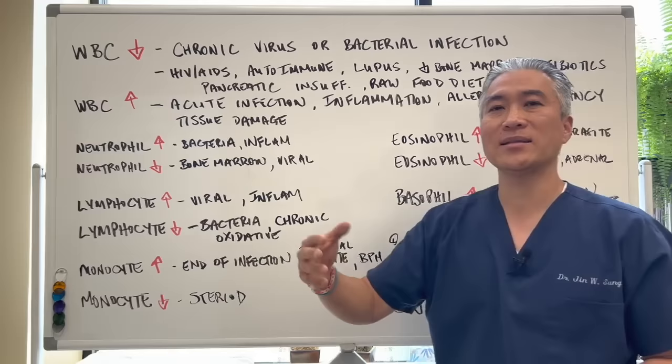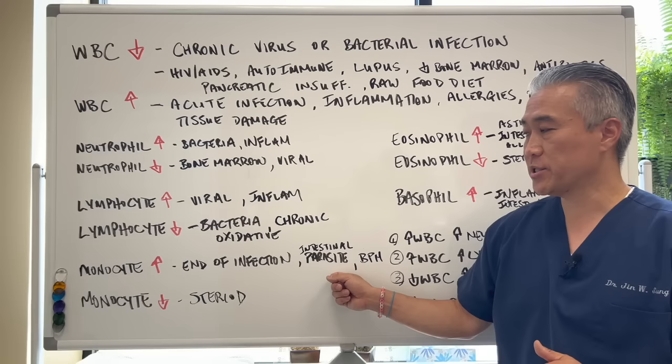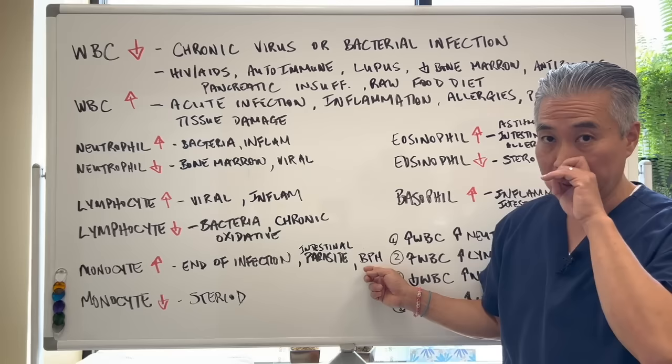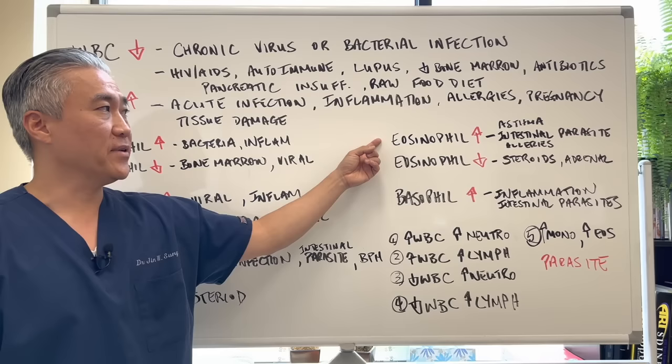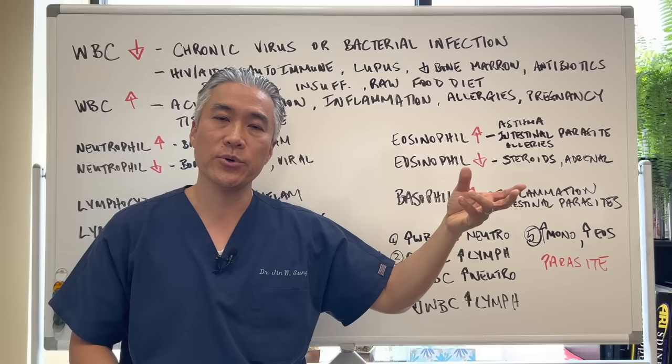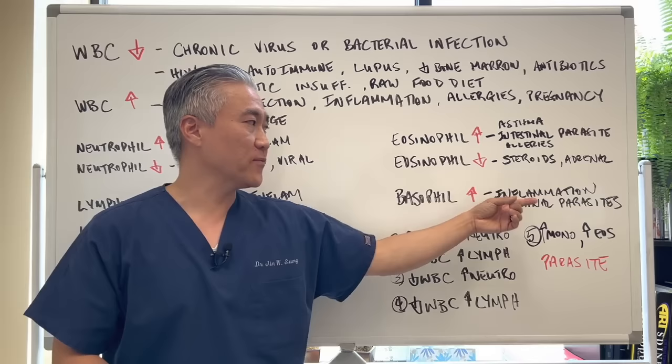Monocytes are elevated at end-stage infection — they come in and clean up what's left over, so at the end of an infection you can have an increase in monocytes. Sometimes they're associated with intestinal parasites and benign prostatic hypertrophy in men. Decreased monocytes can be related to steroids. Eosinophils elevated indicate asthma, intestinal parasites, or allergies — food or environmental. Eosinophils low suggest steroids or adrenal dysfunction. Basophils increase with inflammation and intestinal parasites.